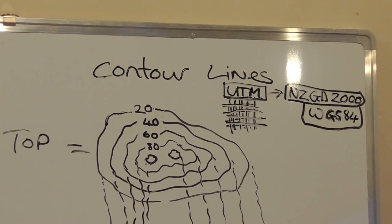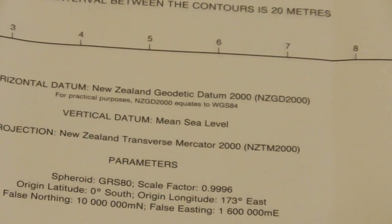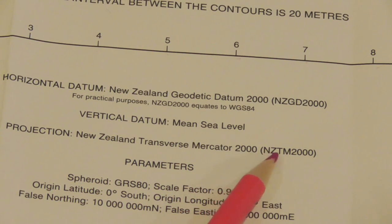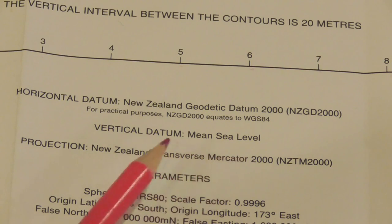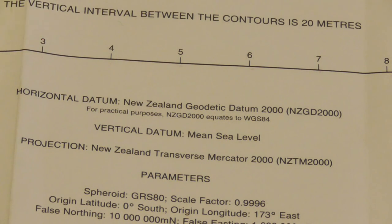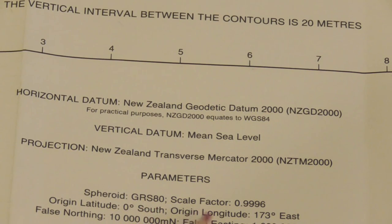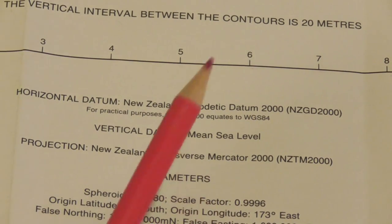Then we go into the projection — New Zealand Transverse Mercator 2000 — we don't need to worry too much about that. It's just talking about how the map was made. It also lists GRS 80, some scales, latitudes and longitudes — not too major for us. Then there's copyright information.